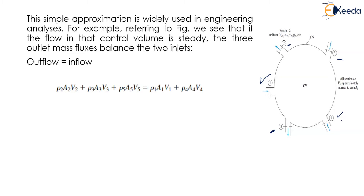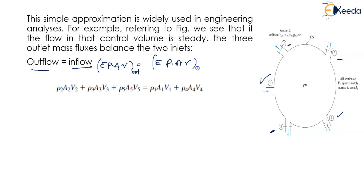Since outflow is balanced by inflow, the summation of ρAV for outlets equals the summation of ρAV for inlets. So we have ρ₁A₁V₁ plus ρ₄A₄V₄ as our inlets, and ρ₂A₂V₂ plus ρ₃A₃V₃ plus ρ₅A₅V₅ as outlets.